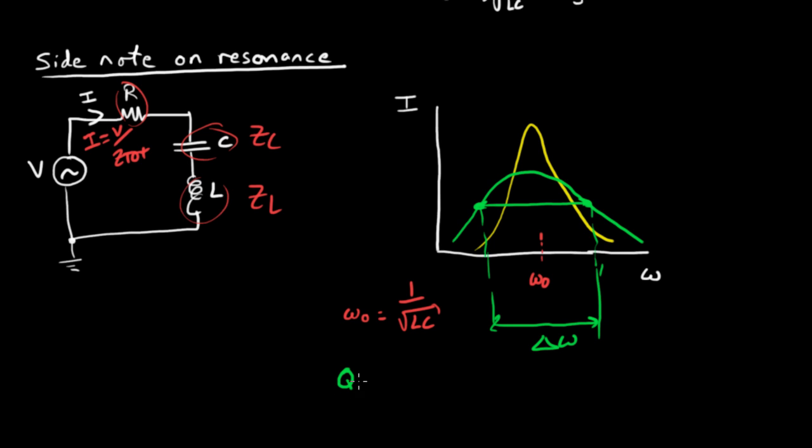We can define a quality factor of the circuit, the resonance, as Q equals omega knot over the delta, that full width half max. And we can say that's L omega knot over R, where L over R is this expression here. And so we simplify more,